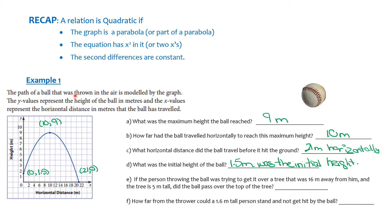The ball is thrown, and they're trying to get it over a tree that was 16 meters away. Here's the tree — it's 5 meters tall. The very tip of the tree, the coordinate at the top of the tree, is (16, 5).